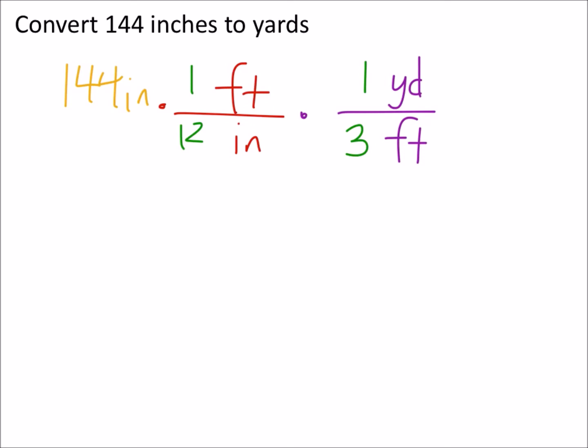Okay, so when I convert this I get 144 times 1 times 1, which would be 144 again. Our inches have cancelled out and our feet have cancelled out, so we're left with yards. That's good. But let's look at the denominator - that would be 144 over 1 times 12 times 3, which would be 36.